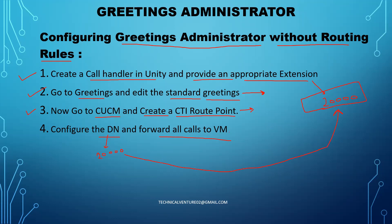Another thing we need is the integration between your CUCM and Unity, because that is a prerequisite. Without that, your call will not reach Unity. You can do that integration with the help of SIP or SCCP - anything like ports or trunk. For this example, I have already configured the integration between CUCM and Unity using ports. I also need to create a CSS and partition, which is mandatory, because I will give the same CSS and partition on the voicemail profile as well as on the phone from which I am going to call.